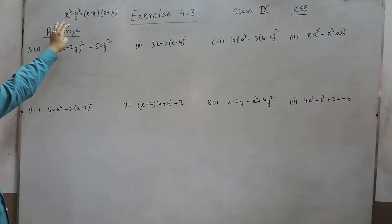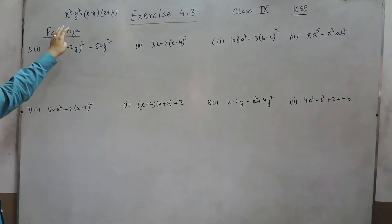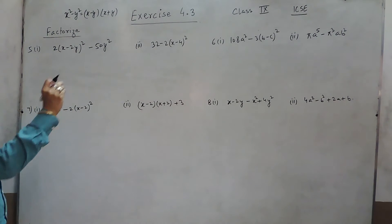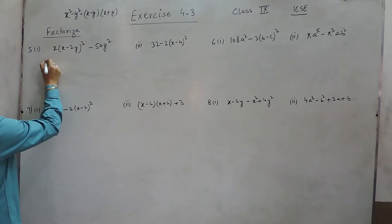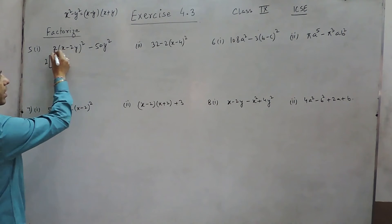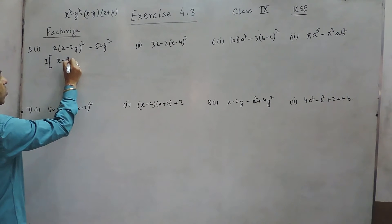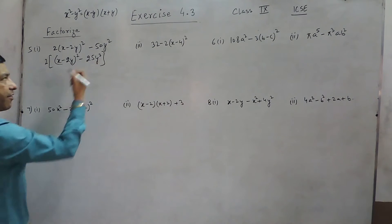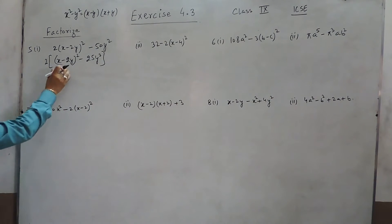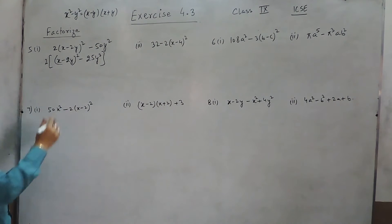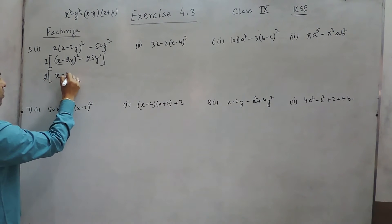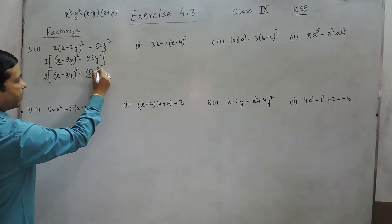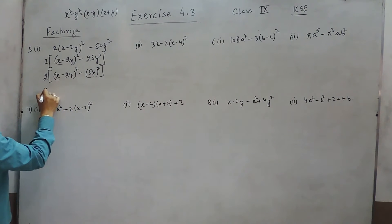We have to solve this exercise using the identity x² - y² = (x-y)(x+y). First of all, we have to take the common factor out. 2 is common in these two terms, giving us (x - 2y)² - 25y². Now, 25y² is a perfect square and (x - 2y)² is also a perfect square.